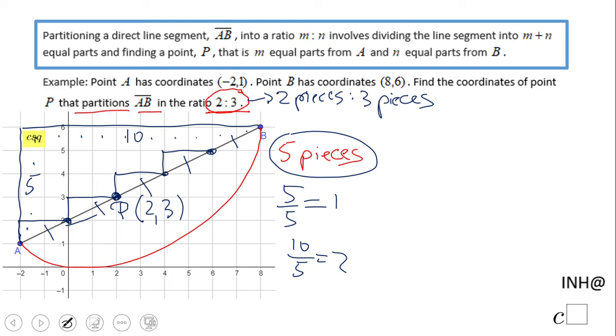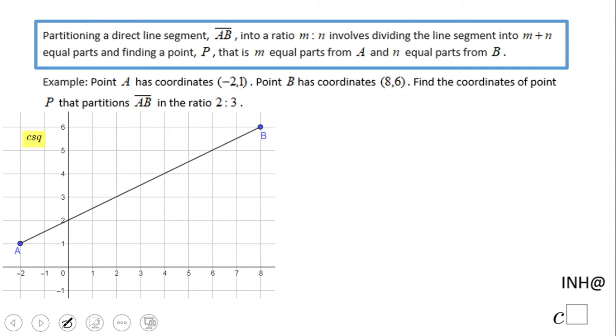Let's take a look at an algebraic format. So over here, XP equals XA—you always start to go first point, you have directed segment in this case A—plus M over M plus N. What are these two guys? These are M, these are N. Times XB minus XA.